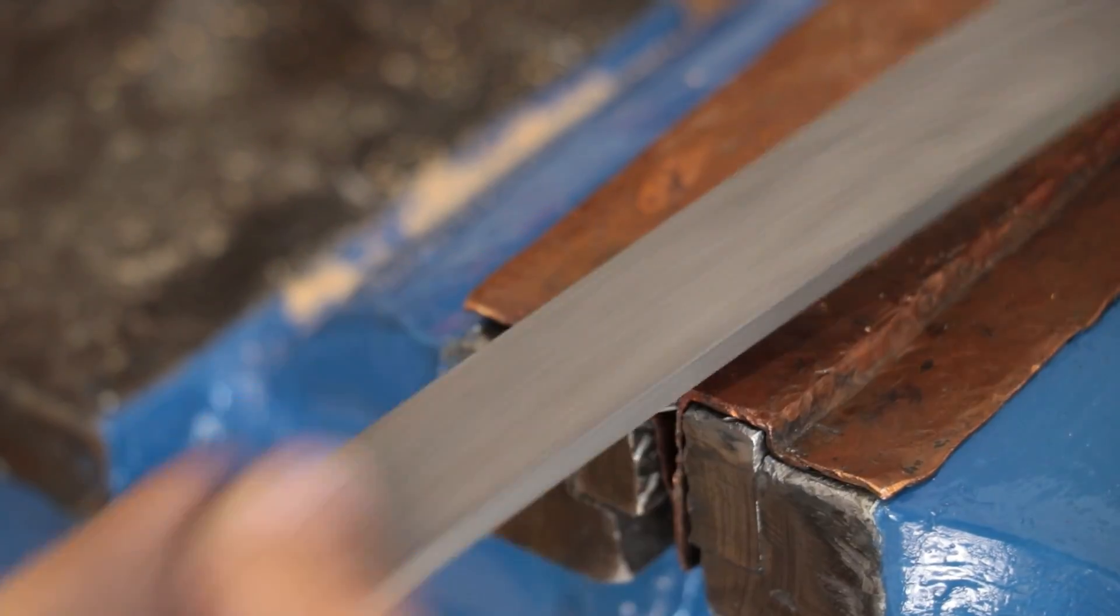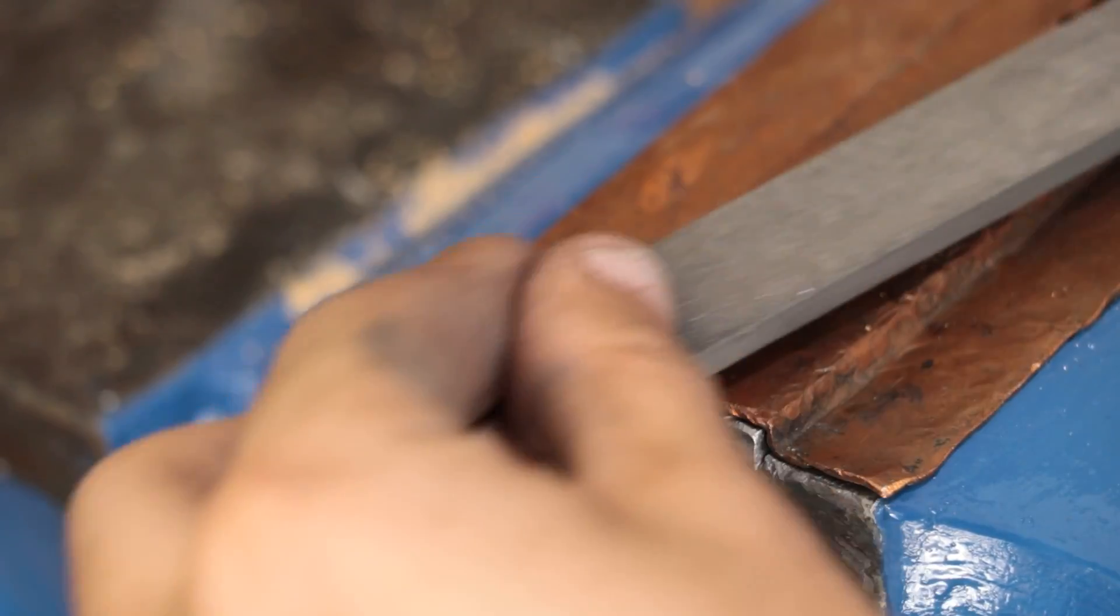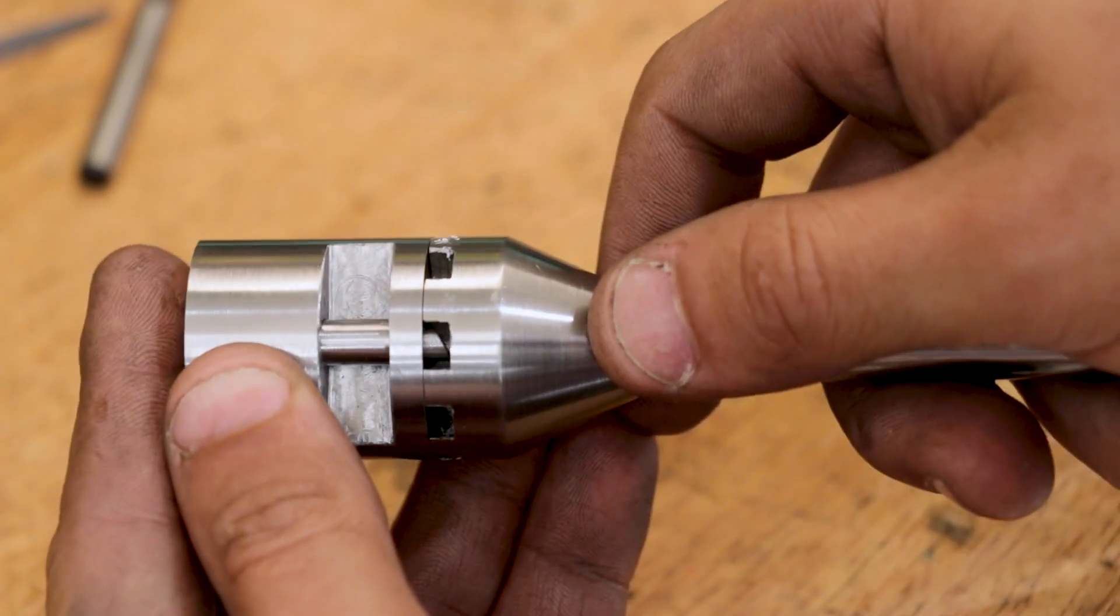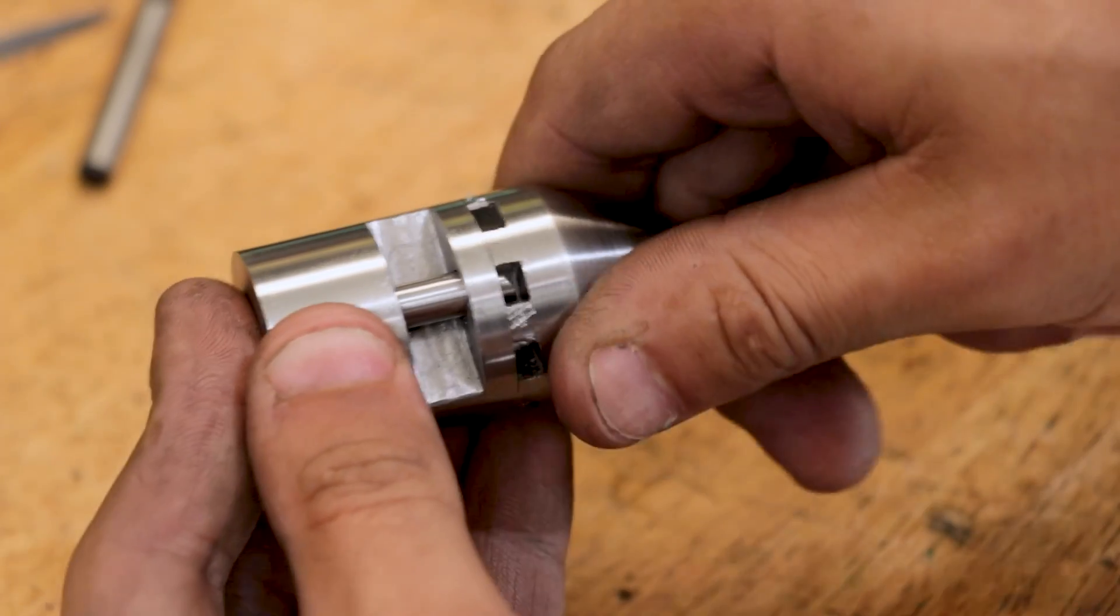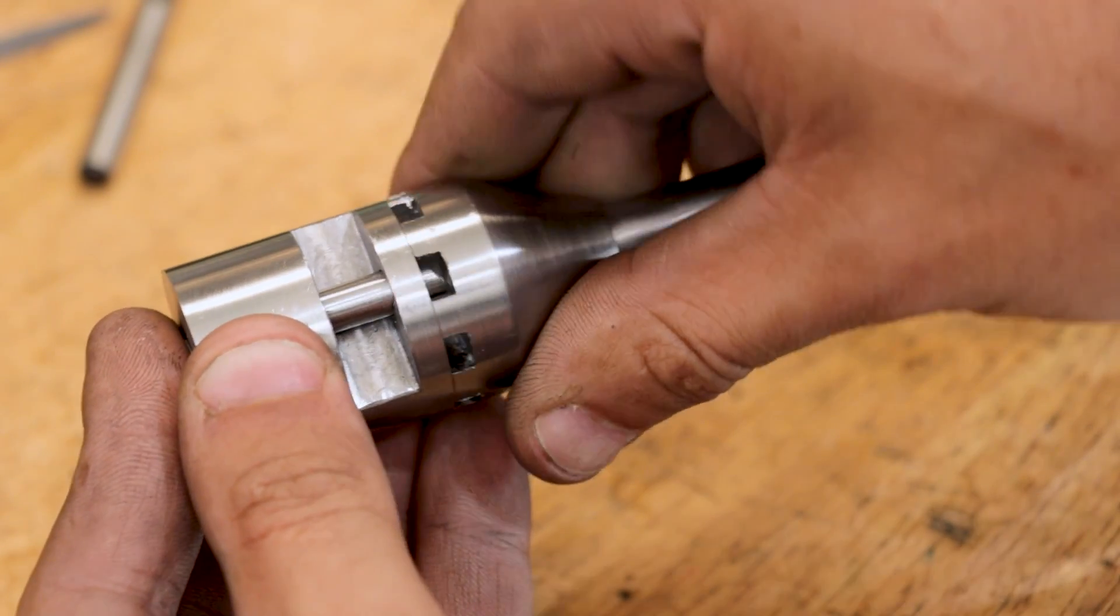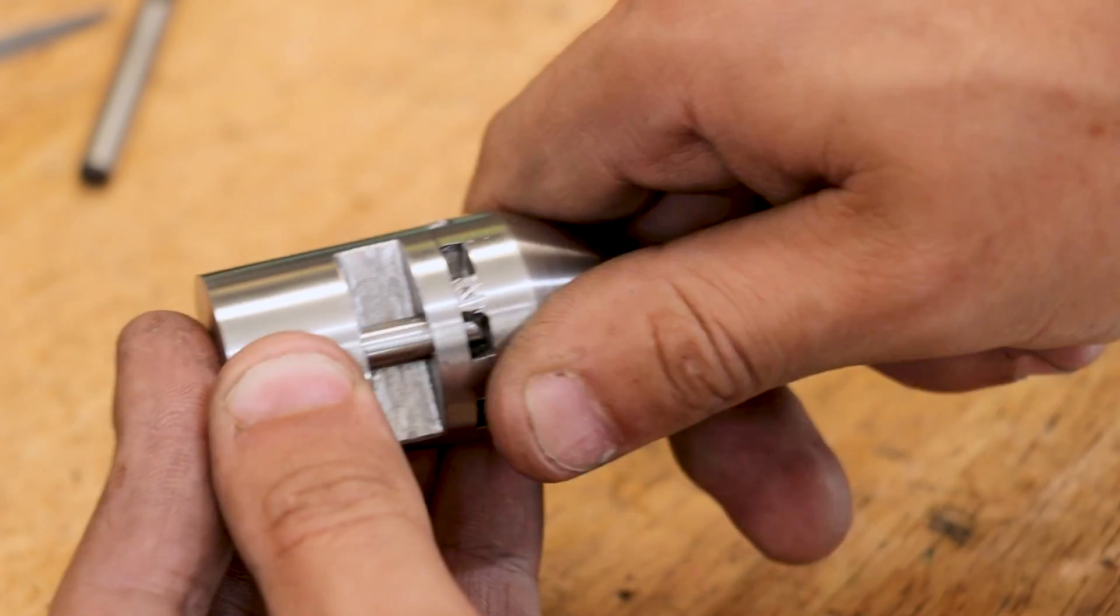I can now start to shape the pin with the file until the ratchet mechanism starts to work. And it took a fair amount of filing and refining until I got it to a point where I was happy with it. And this probably involved remaking the part three or four times.